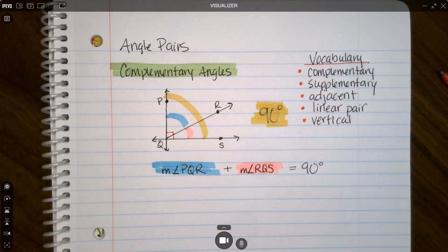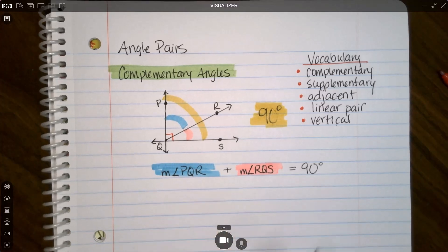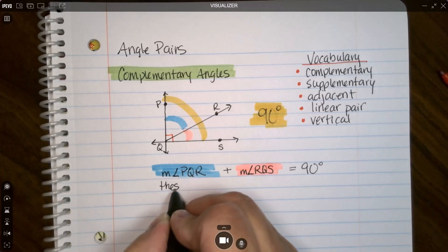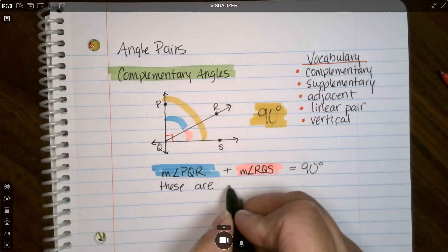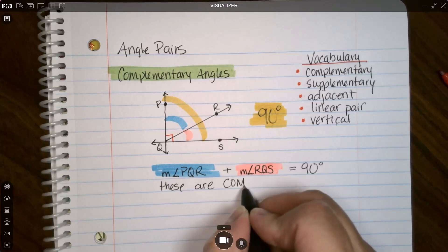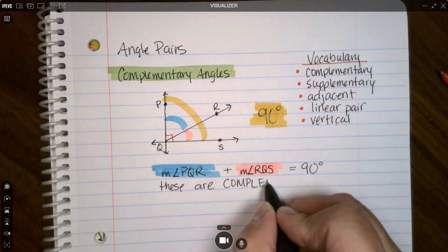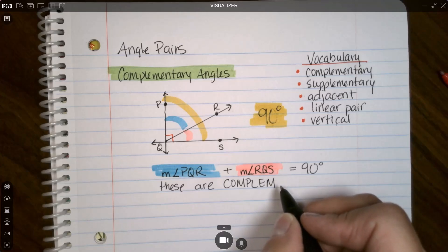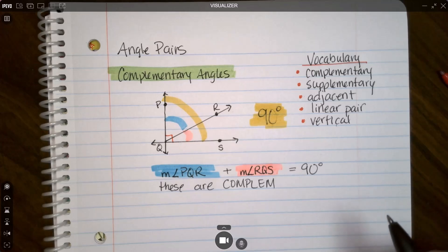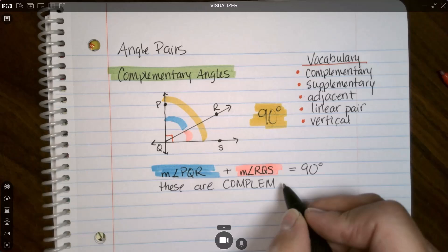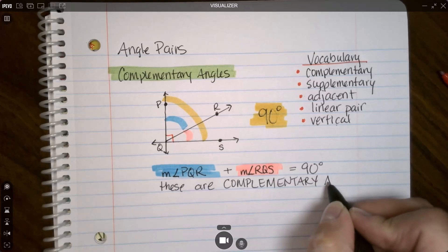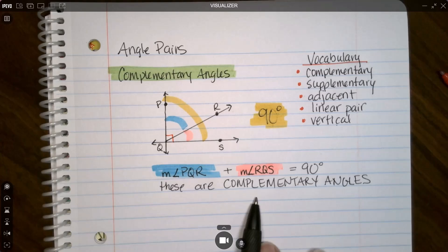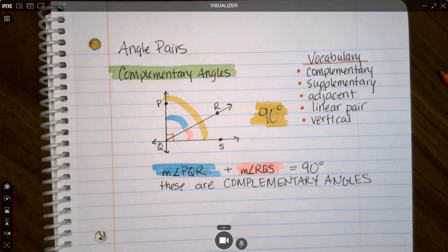This is in text. Obviously if you're reading a book it's not going to be highlighted like that, but you could highlight it. So if these two angles add up to 90 degrees, we call them complementary angles. Make sure you spell it right. If you use an i, you're talking about giving someone a compliment. But if you're talking about two things that complete each other, complementary.